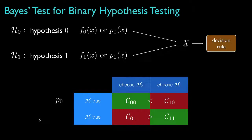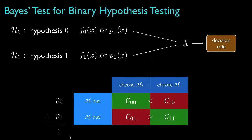Furthermore, let's assume that we have some prior knowledge about the probability that each of the hypotheses are true before we observe the data. P0 might be the prior probability that H0 is true, and P1 might be the prior probability that H1 is true. The sum of these probabilities must be equal to 1, so we really only need to specify one of them in any situation.